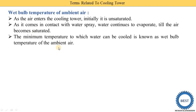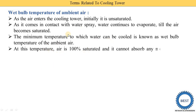The minimum temperature to which water can be cooled is known as the wet bulb temperature of the ambient air. When the air has 100% water vapor particles, we are no longer able to reduce the temperature of the water. At this temperature, air is 100% saturated and cannot absorb any more water vapor. When the air stops absorbing water vapor — when it is 100% saturated — the temperature of the water is not reduced further; this is called the wet bulb temperature of ambient air.